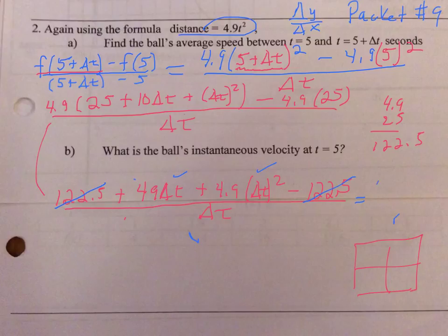So on the numerator, I'm going to factor out a delta t, and I'll have 49 plus 4.9 delta t, all divided by delta t. Those delta t's can cancel, and I'm left with 49 plus 4.9 delta t. This is the answer to a.